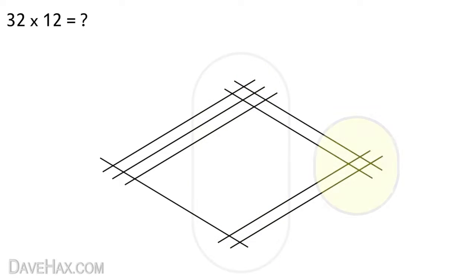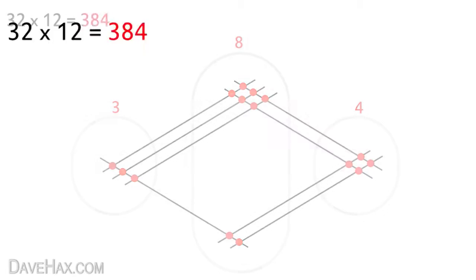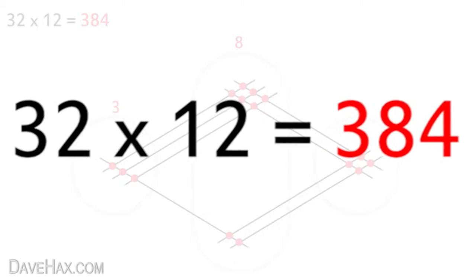Then we mark out our three zones again and starting from the right start counting the dots. 1 2 3 4. 1 2 3 4 5 6 7 8. Write that here and finally 1 2 3. 3 8 4. 384. There we have our answer. Simple.